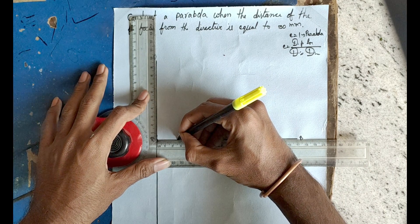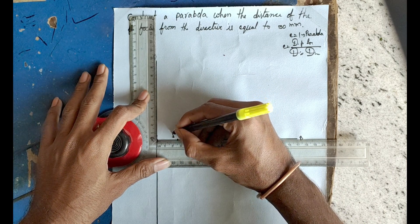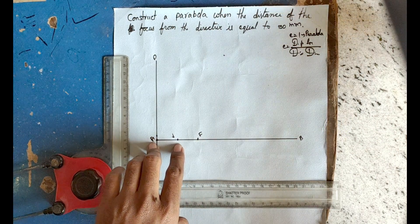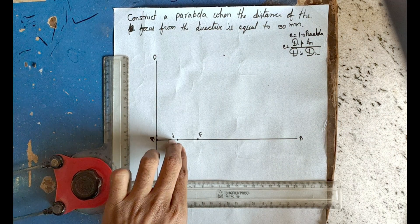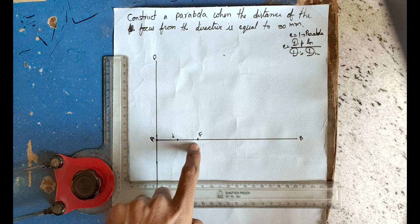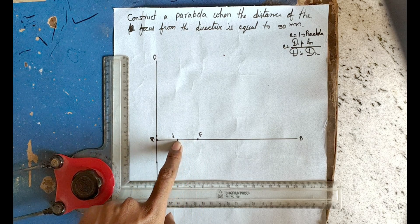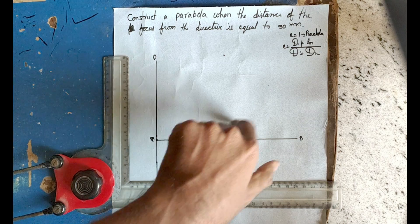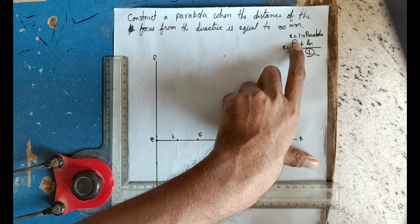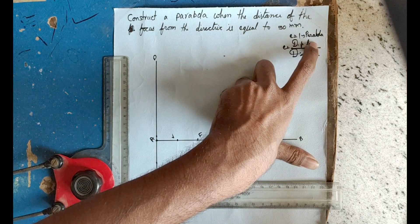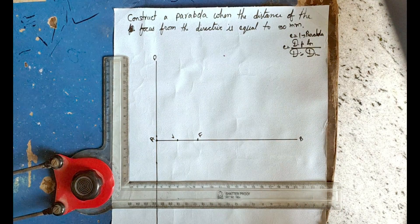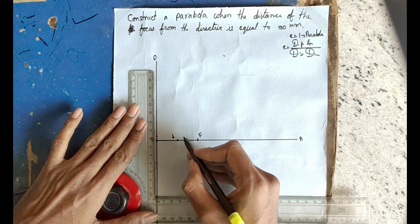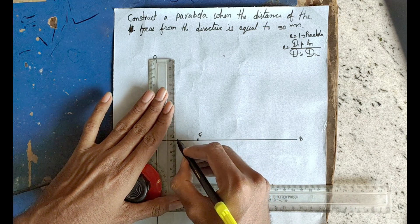Label this midpoint as V (vertex). At point V, the distance from the focus equals the distance from the directrix, so eccentricity automatically equals 1. This confirms it is a parabola. Now draw a vertical line through point V.